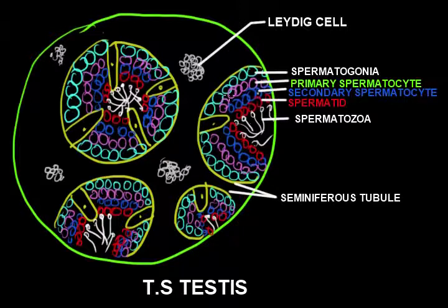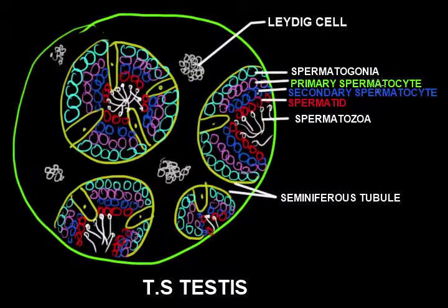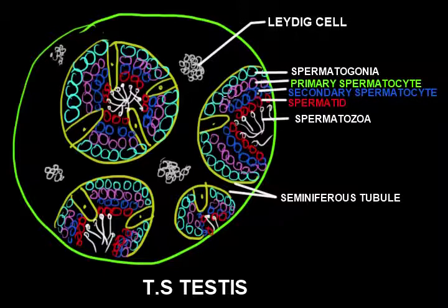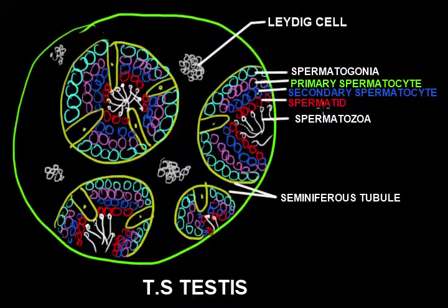These are the spermatogenic cells arranged in layers. The outermost layer consists of cells known as spermatogonia, which are considered stem cells of the testes that help in the development and formation of sperm. The next layer is composed of primary spermatocytes, followed by a layer of secondary spermatocytes, then spermatids, and finally spermatozoa. Together, all these layers constitute the spermatogenic cells.